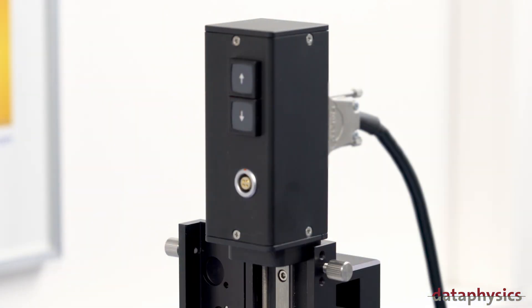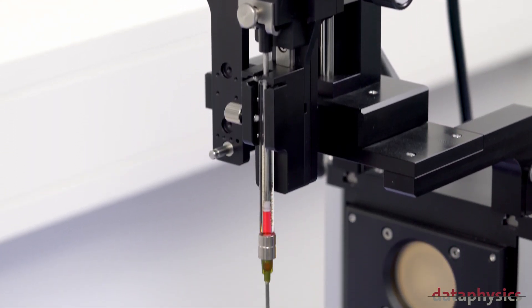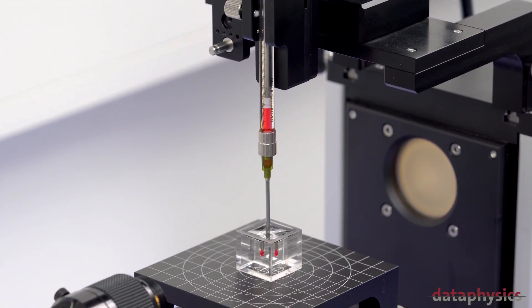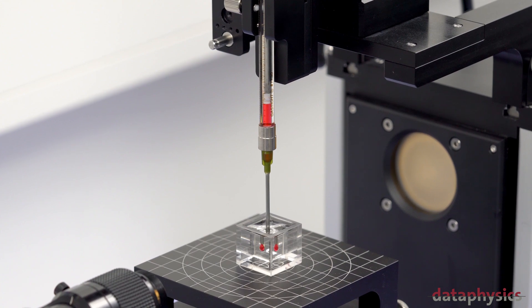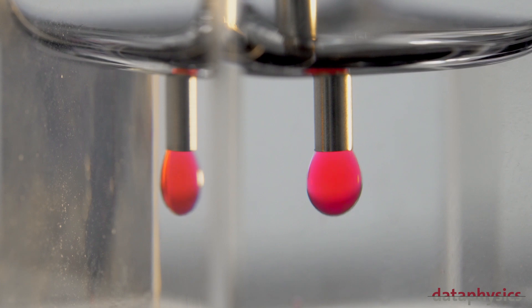The electronic syringe module of the optical drop shape analysis system from Data Physics Instruments can generate oscillating drops. The liquid is pushed and pulled periodically while the camera captures the changing drop shape.